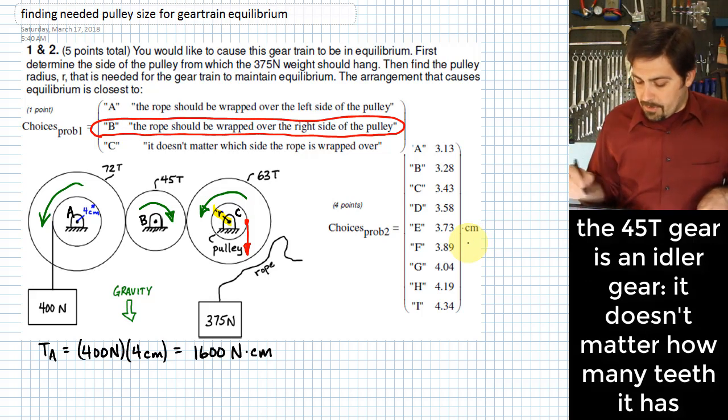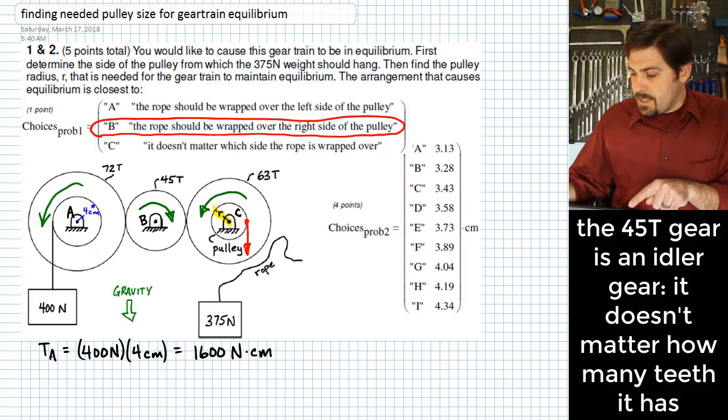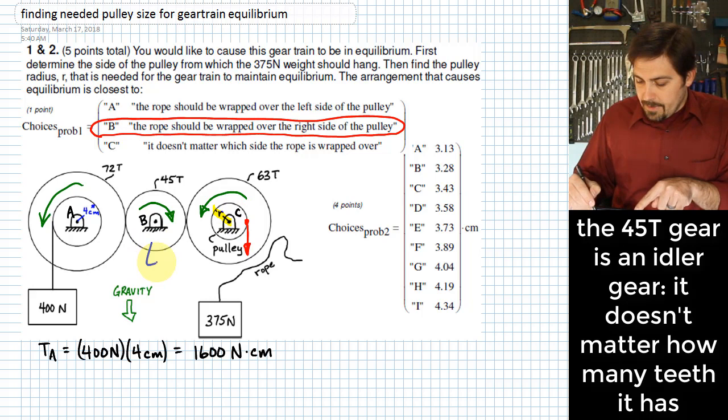The next thing we want to do is figure out how does that torque translate and work its way over to the shaft over here at C. What I want you to see here is that this gear in the middle is a special kind of gear. It is called an idler.